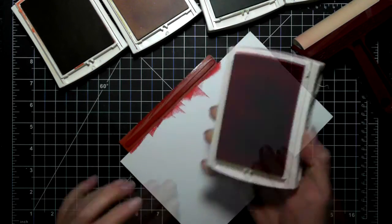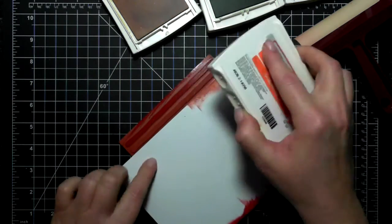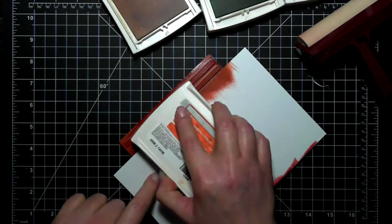In rainbow order: Watermelon Wonder, Tangelo Twist, Sew Saffron, Wild Wasabi, Marina Mist, Island Indigo, and Perfect Plum.